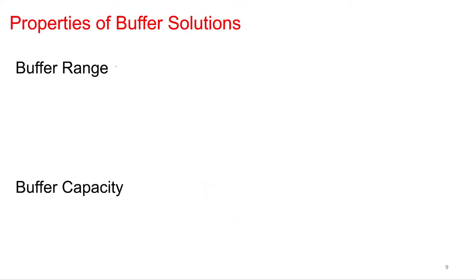Alright, so the buffer range. So this is the range. I know you're not supposed to use the word to define the word, so I'm not supposed to use range in the buffer range, but I don't think that counts for this example. So the range of pH in which the buffer will be effective, a.k.a. be able to minimize pH changes. Because that's what buffers do, and that's why they're so awesome.